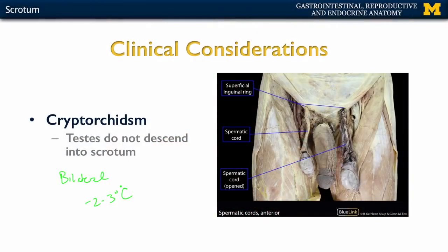We've talked about the scrotum, and now we're going to talk about the specifics of the spermatic cord — not only in terms of the coverings but also the contents.